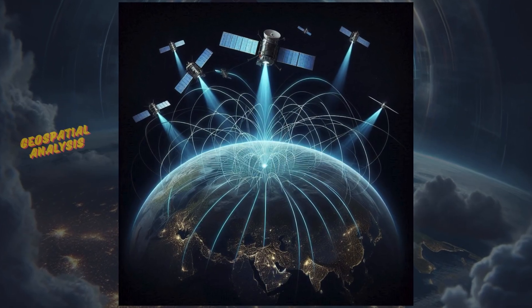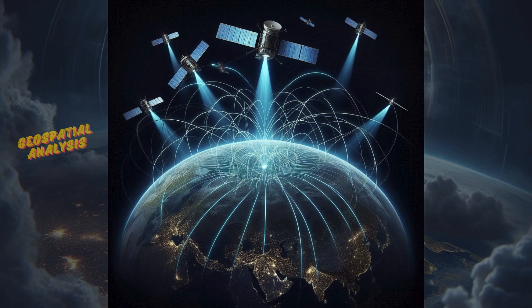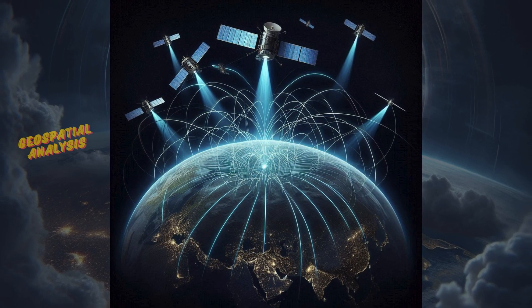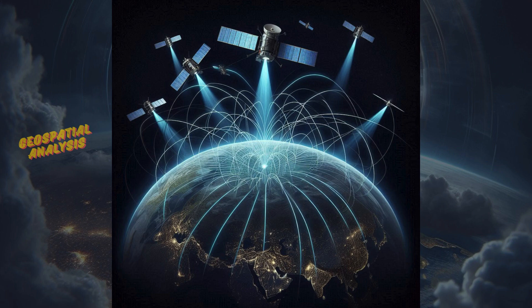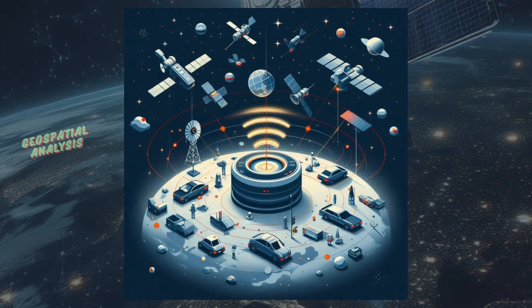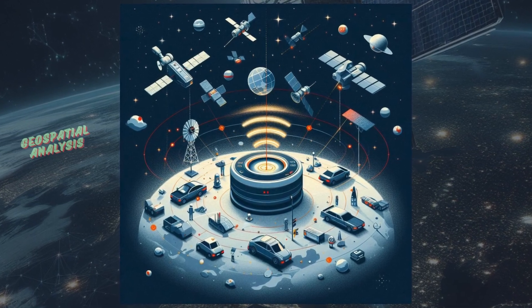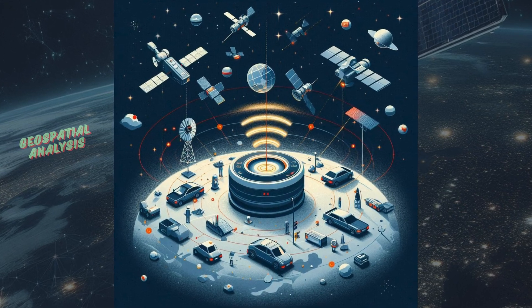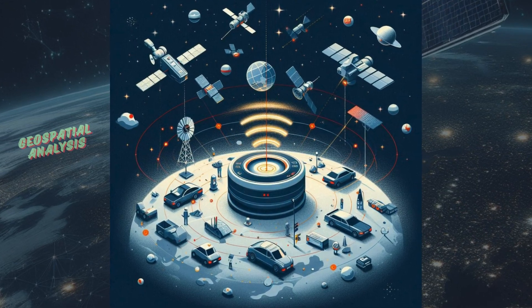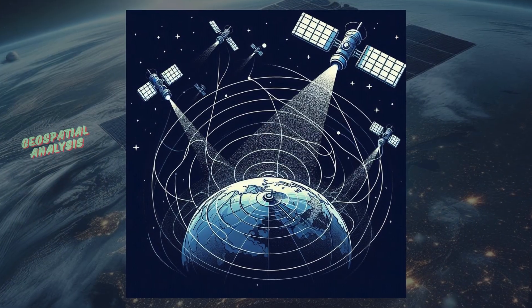Your GNSS receiver, whether it's in your smartphone, car, or specialized equipment, picks up these signals from multiple satellites. By calculating how long it took for the signals to reach the receiver, the device can determine its distance from each satellite. Using a process called trilateration, the receiver then calculates its exact position on Earth.